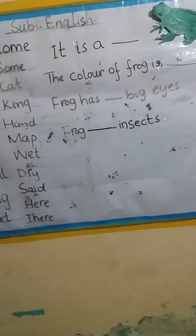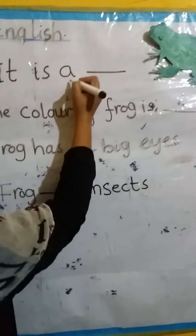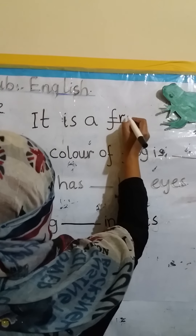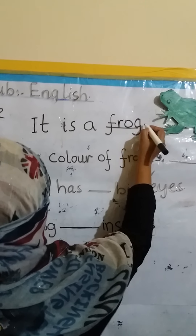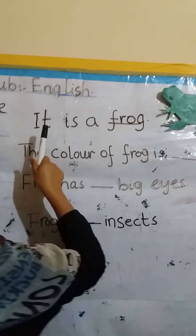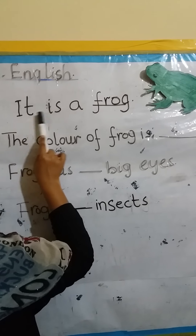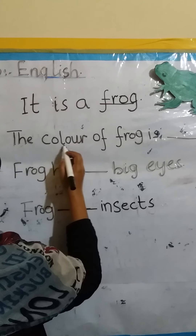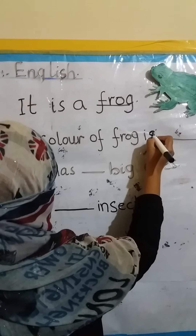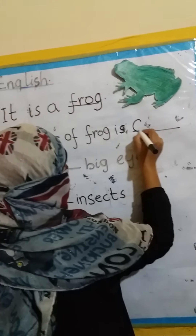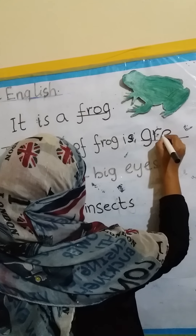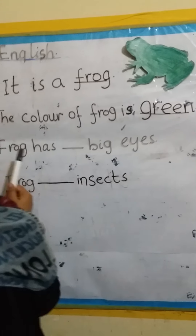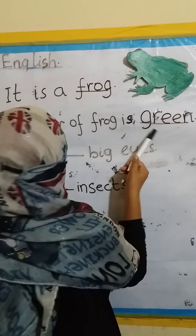Now we will write. It is a — you can tell me, it is a... yes, very good student. It is a frog. The next sentence: the color of frog is — what is the color of frog? Yes. The color of frog is green.